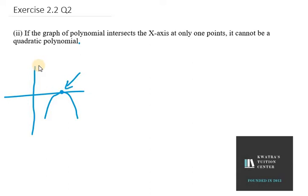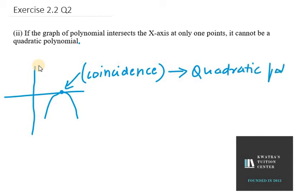This will be a coincidence point, and we can say that it is a quadratic polynomial as well, because here we have two points that form on a single point.